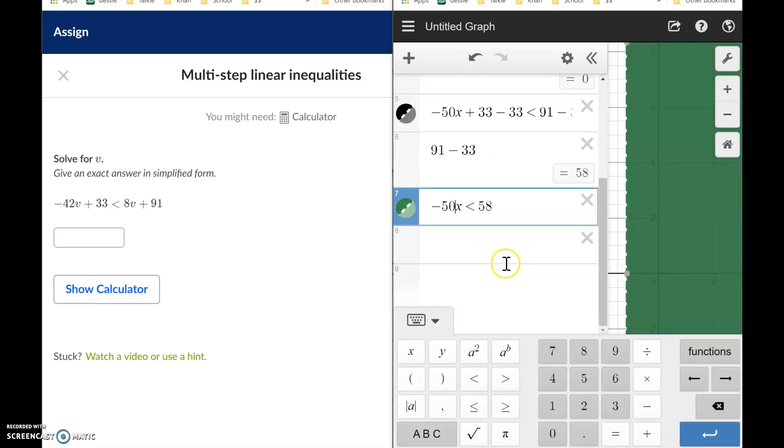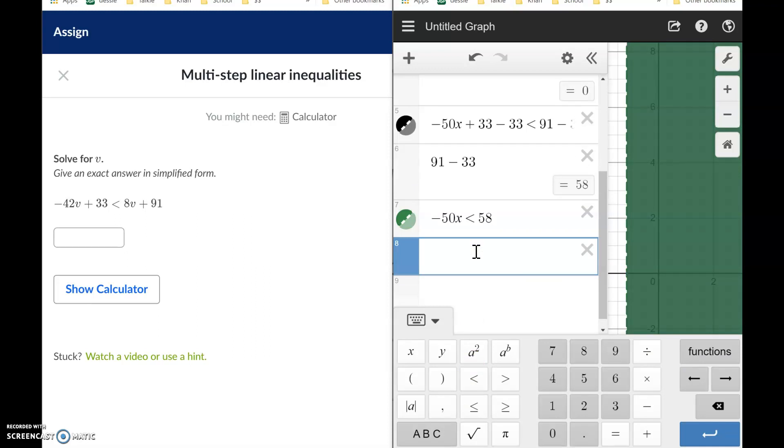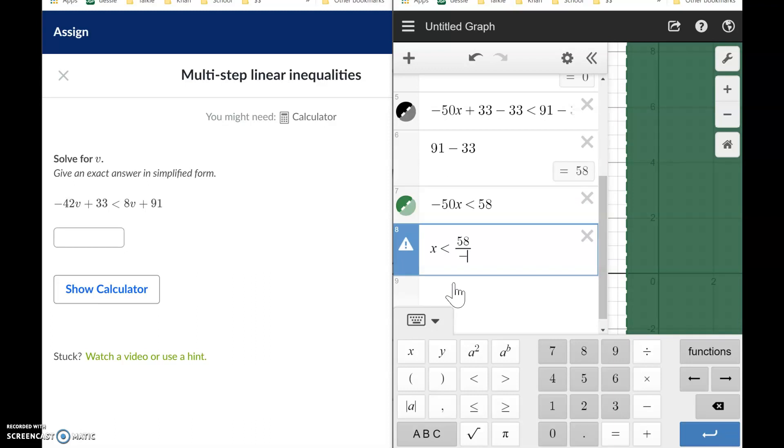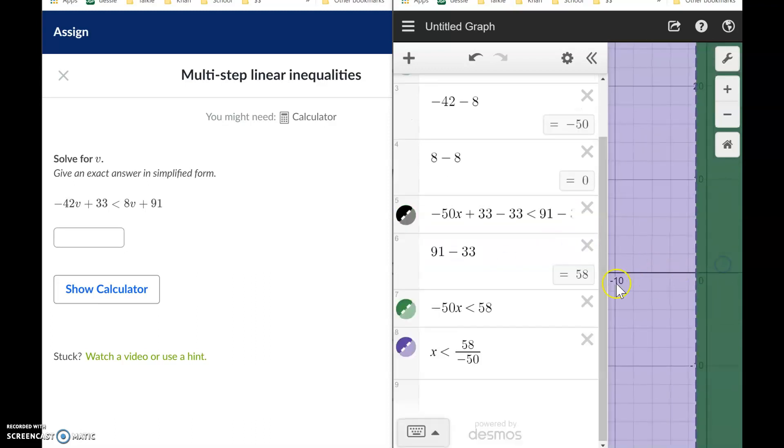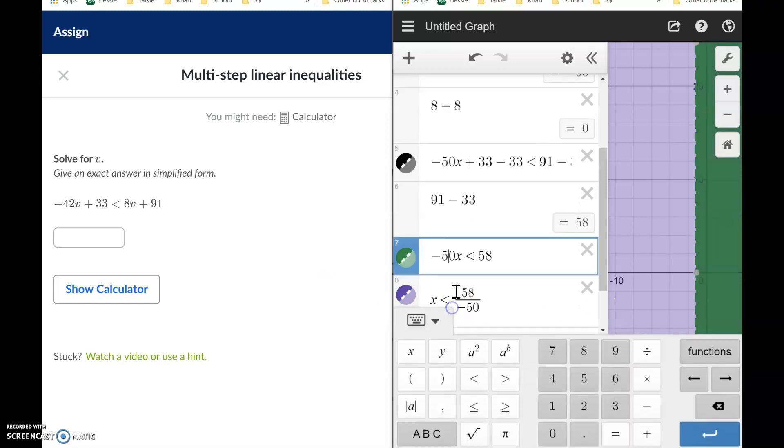Now we've got to get rid of this negative 50. It's being multiplied, so let's just divide. We got negative 50 divided by negative 50 is 1. 1 times x is just x, is less than or equal to 58 divided by negative 50. Whoa, whoa, whoa, and now the shade's up over here.